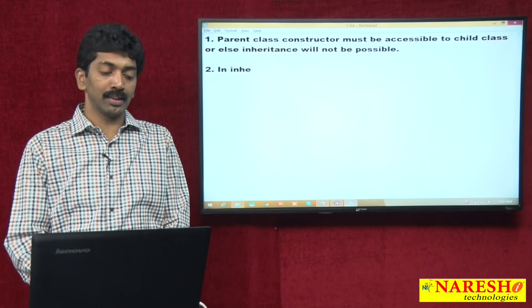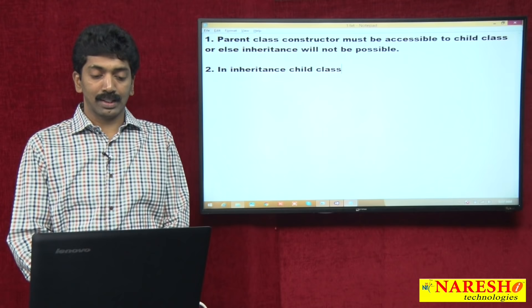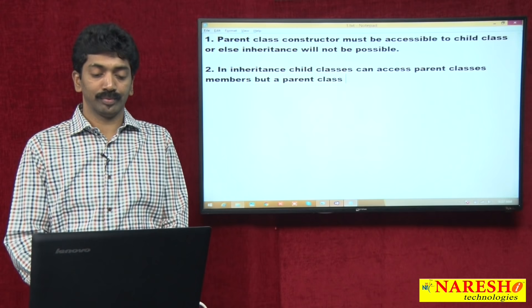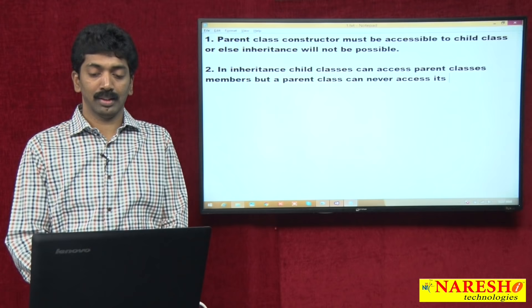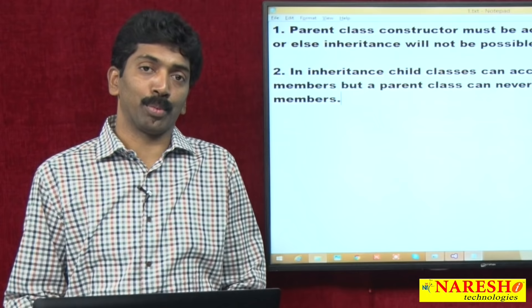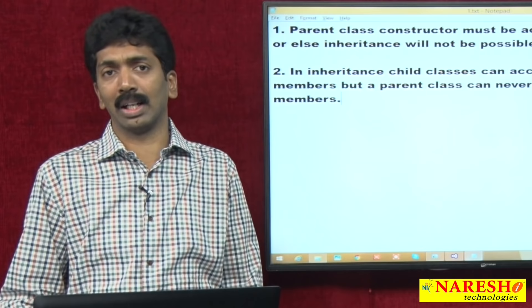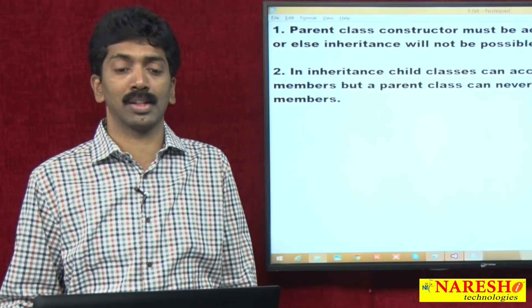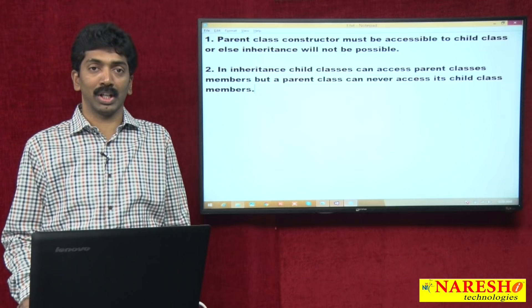The second point: in inheritance, child classes can access parent class members, but a parent class can never access its child class members. According to the law, children have rights on the parent's property but parents never have rights on the children's property. The same principle applies here — child class has a right on parent members but parent never has right on the children's members.